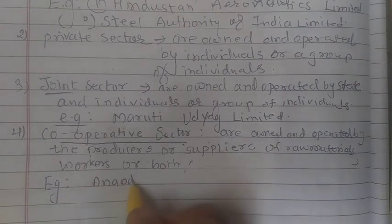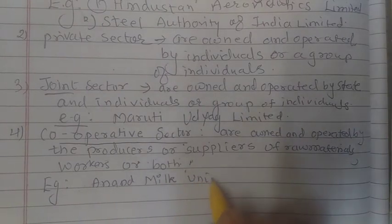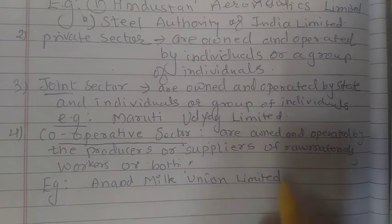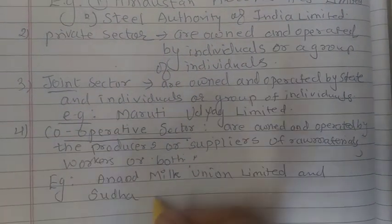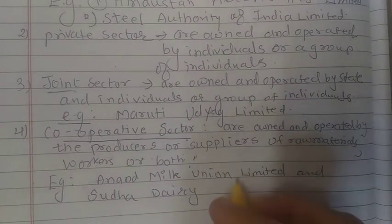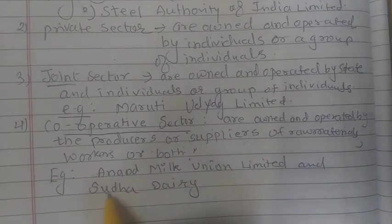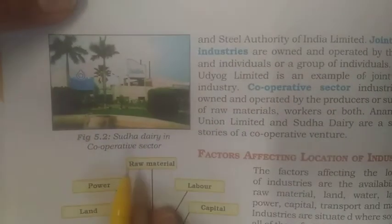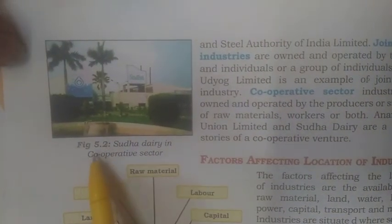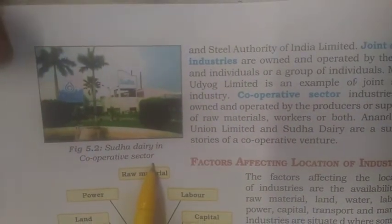Examples of cooperative sector include Anand Milk Union Limited and Sudha Dairy. The textbook figure 5.2 shows Sudha Dairy as an example of a cooperative venture. Sudha Dairy is an example of the cooperative sector, where the business is owned by producers or suppliers of raw materials and workers.